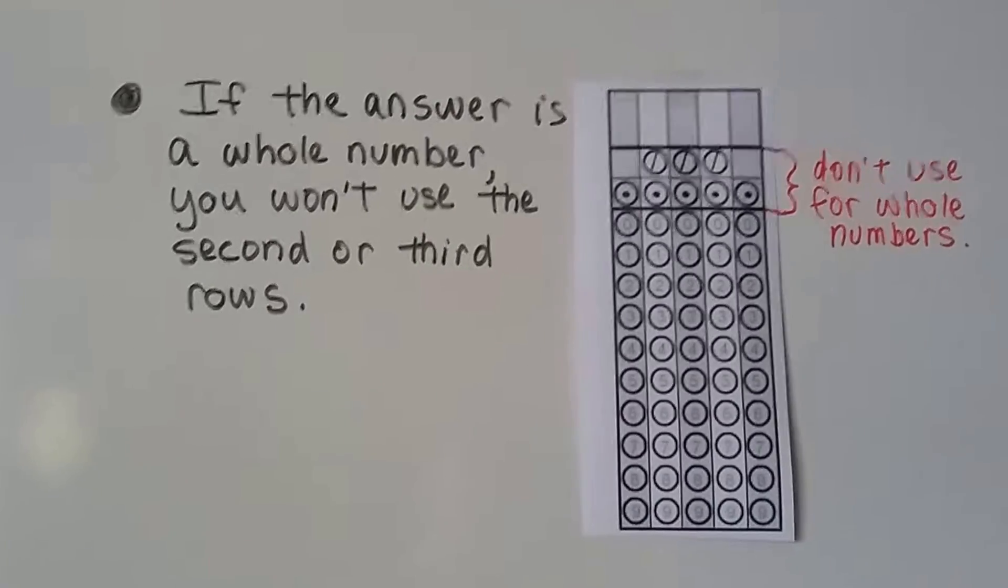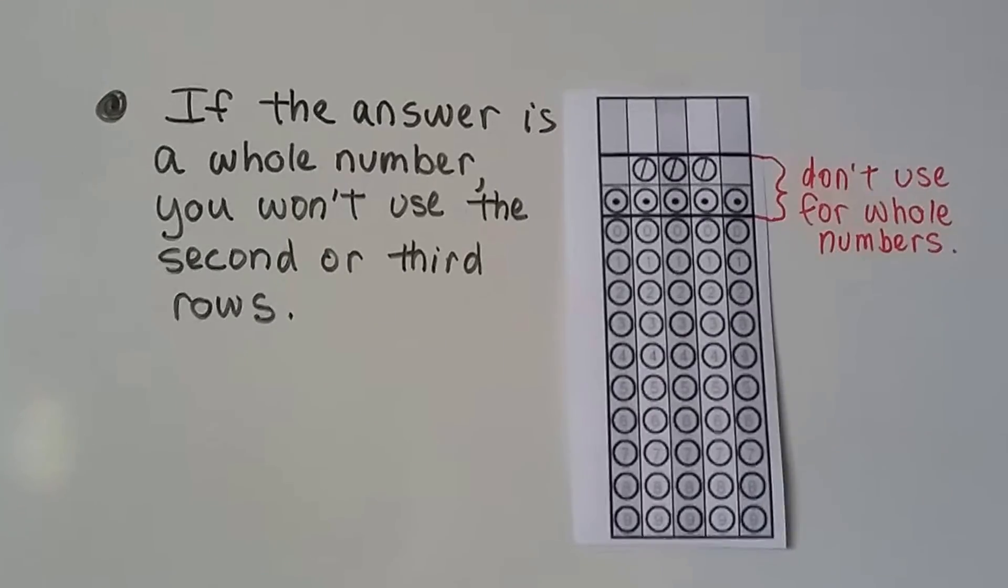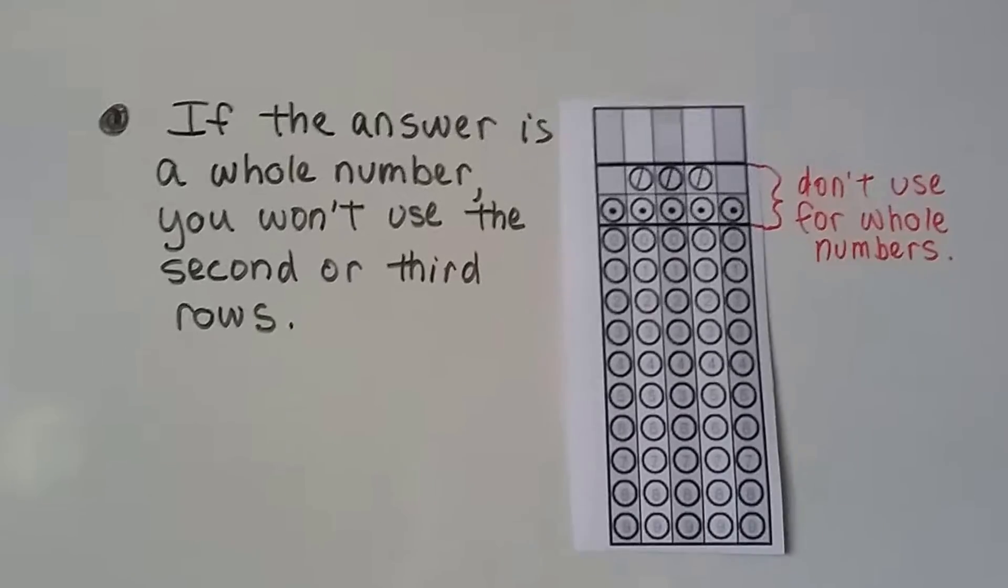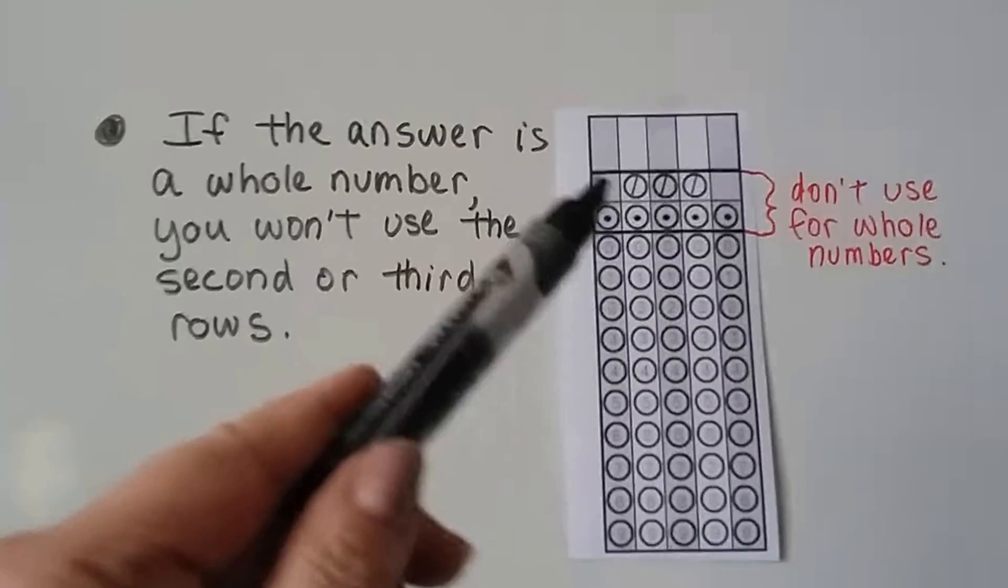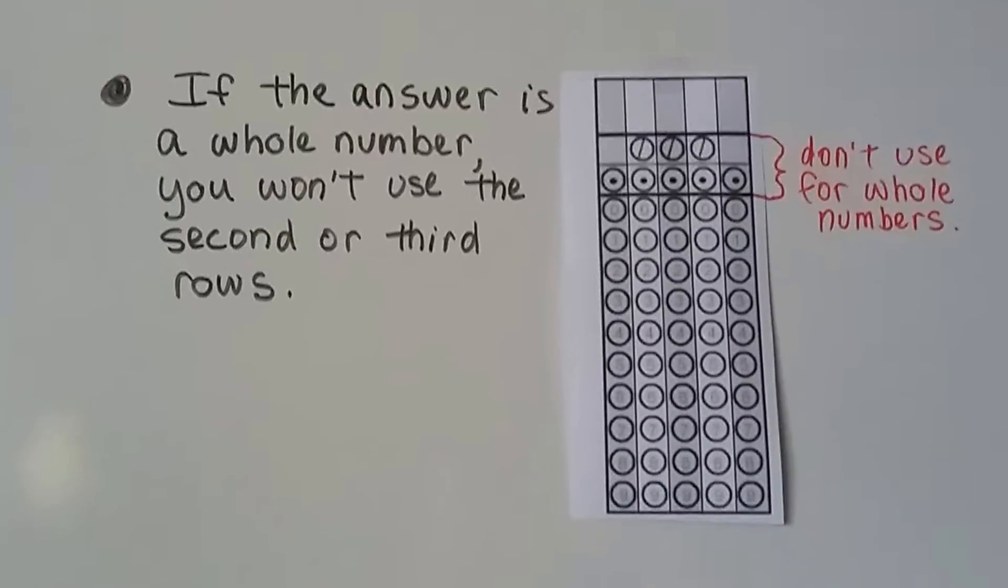If the answer is a whole number, and we know what that is now if you've been watching these GED videos in this playlist, it's a counting number. It's no fractions or decimals allowed. So if the answer is a whole number, we won't even use the second or third rows. Just ignore these. They're just there in case there's decimals or fractions.